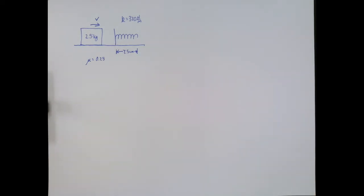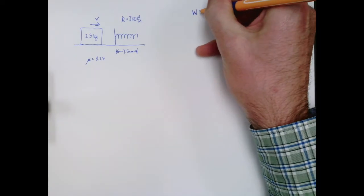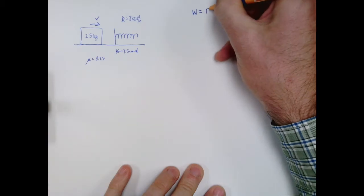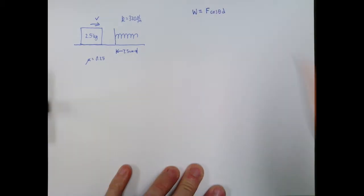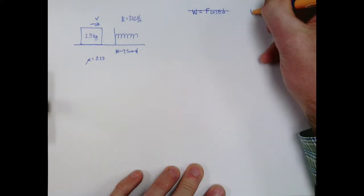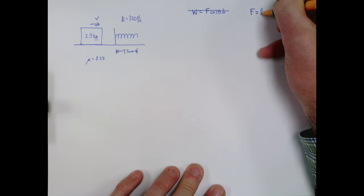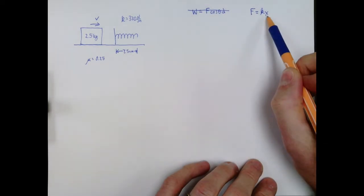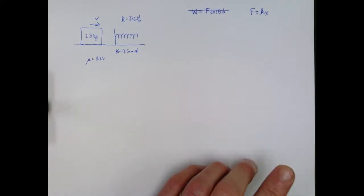Now part A of this question says what is the work done by the spring force? So we actually have to calculate work here and we have to be careful. Maybe the first thing that comes to your mind is work equals F cosine theta d. Not going to use that. Why not? Because you can only use that formula if the force is a constant force. And definitely the spring force is not constant. You might remember that the formula for the force that a spring exerts is equal to kx. At least the magnitude of the force is equal to kx. And so that means that as the x changes, the f changes. So can't use that formula.